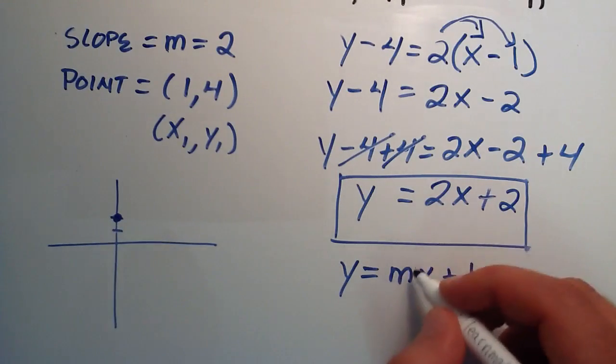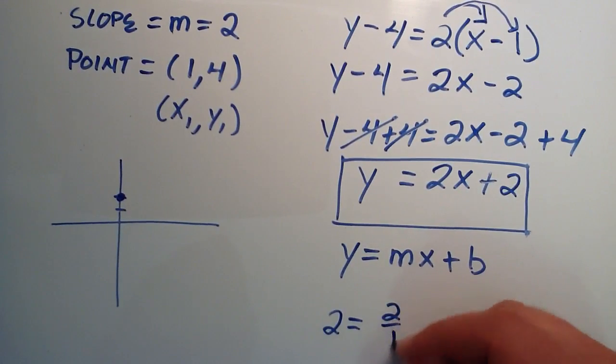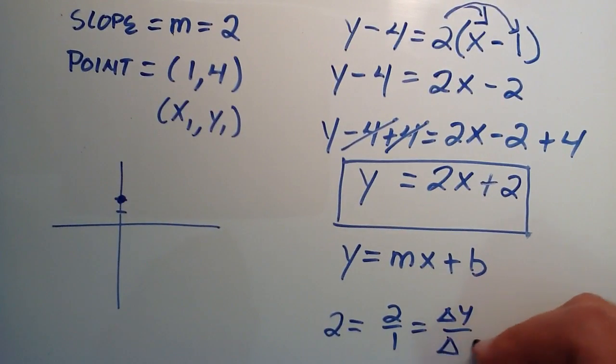And then the m tells us our slope is 2, and 2 is really the same thing as 2 divided by 1, which is our change in y divided by our change in x.